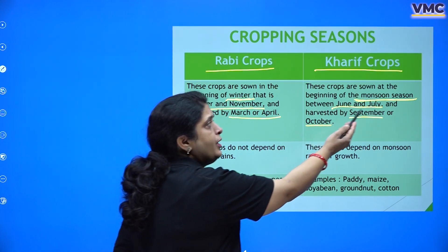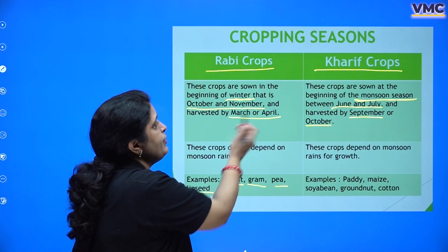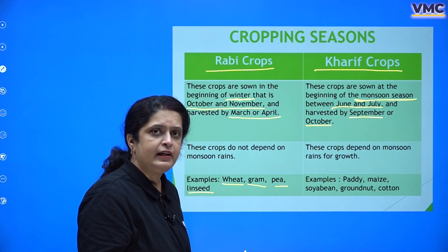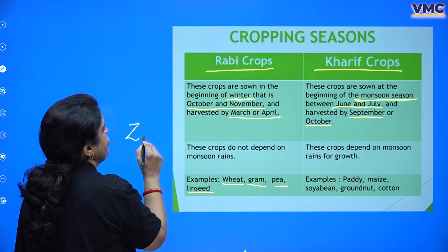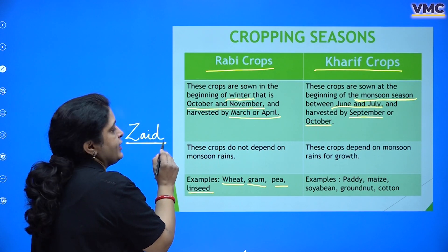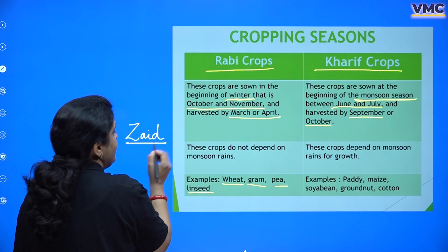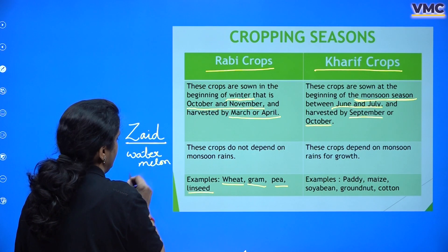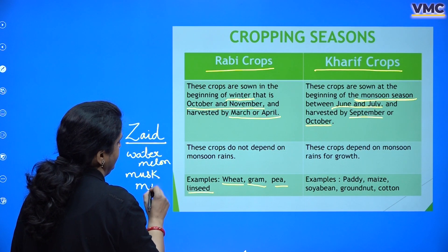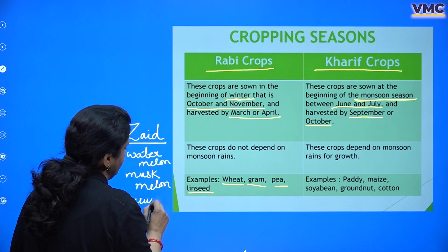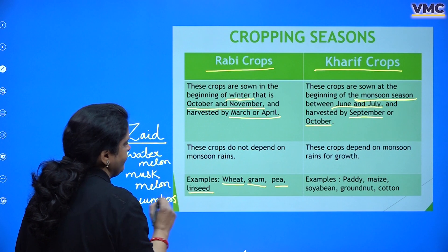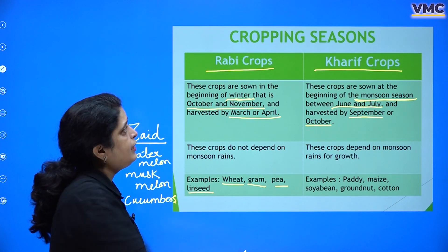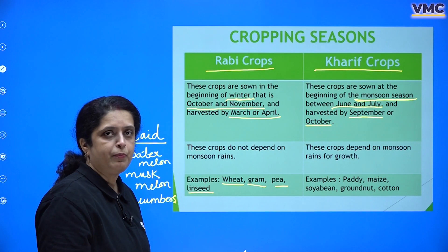You might be wondering — from March to June, do the fields remain empty? No! This is the time when we sow the Zayad crops. Most textbooks do not have this, but you should know that Zayad crops are the summer crops — watermelon, muskmelon, cucumbers — everything most beneficial in summers. So there are three categories of crops: Kharif, Rabi, and Zayad.